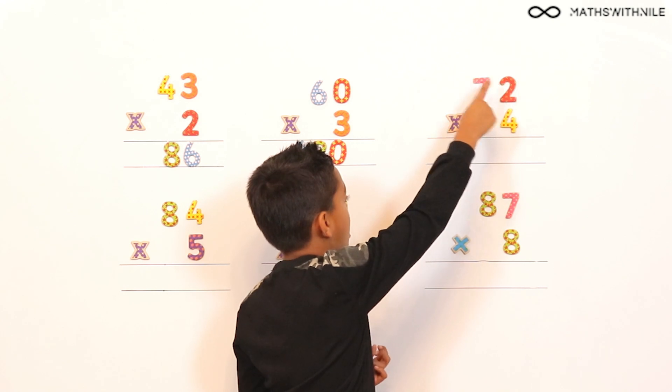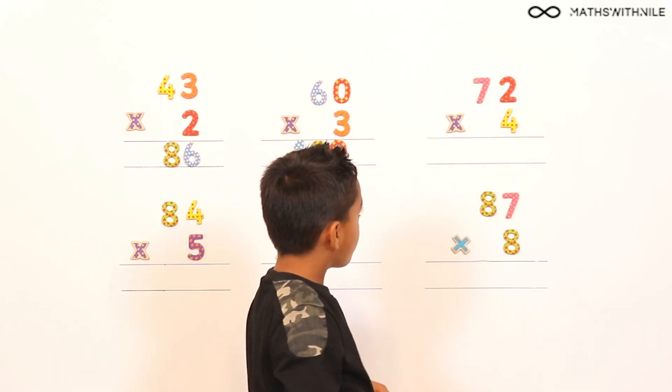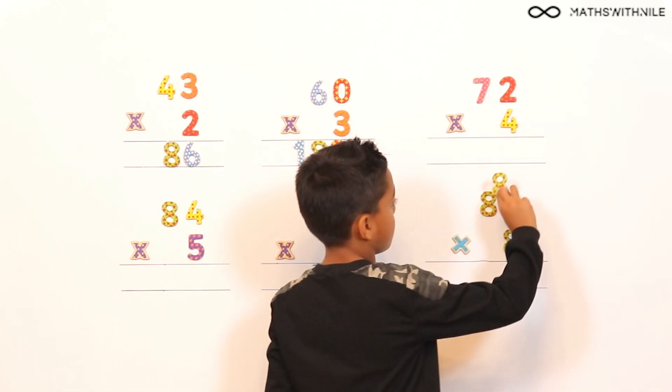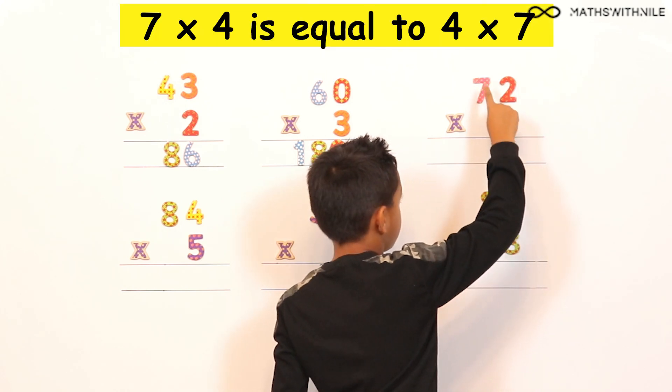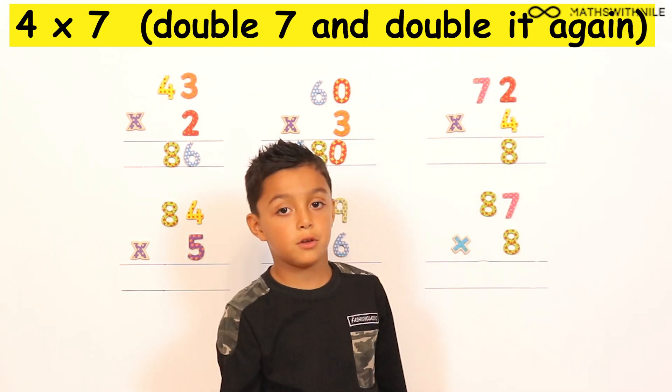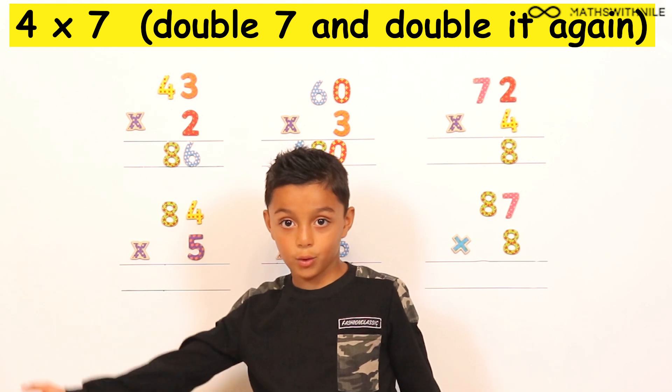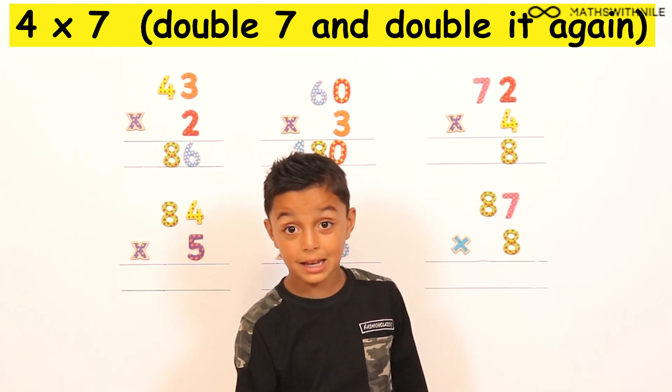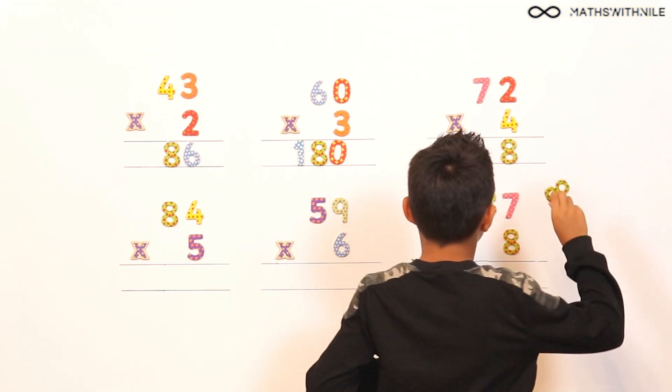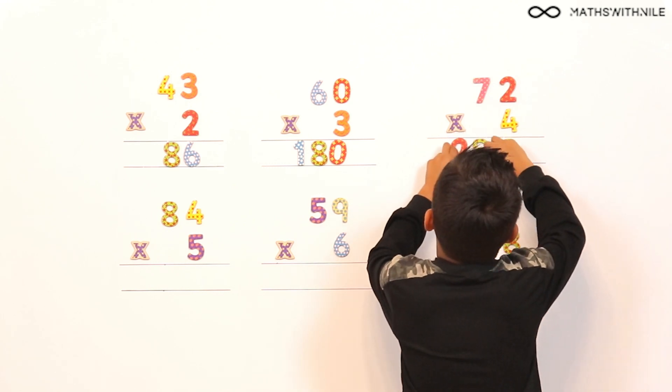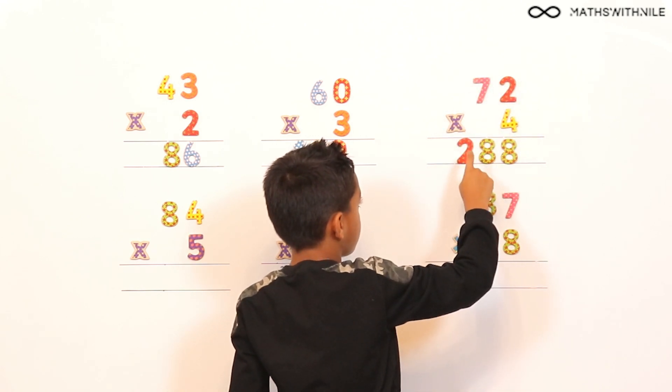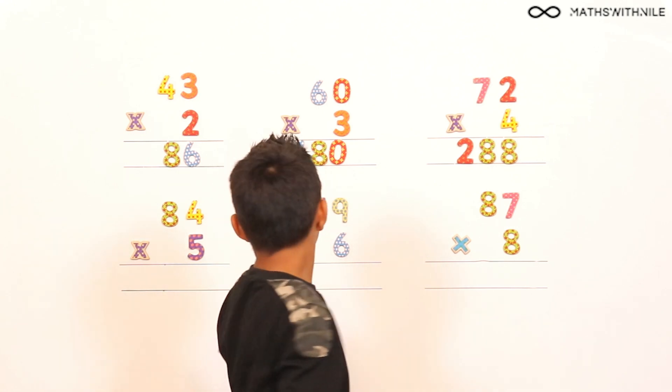72 times 4. So we'll do 2 times 4, which is 8. Okay, so you started with the units column. Yeah. And then 7 times 4. So 2 times 7 is 14. And then 2 times 14 is 28. So we'll put a 28 here. 72 times 4 equals 288. Excellent, Niall.